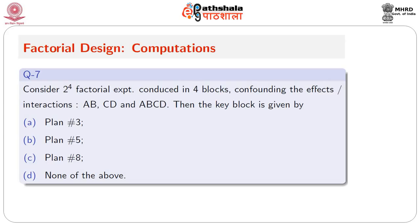Consider a 2⁴ factorial experiment conducted in 4 blocks confounding the effects and interactions AB, CD and their generalized interaction ABCD. There are 16 level combinations, and since it is conducted in 4 blocks, every block has size 4, so the key block also has size 4. For AB confounding: A−1, B−1, C+1, D+1 splits into 8 and 8. For CD: A+1, B+1, C−1, D−1 also gives 8. Cross these and you get 4, 4, 4, 4. Identify the key block and match with the solutions given.